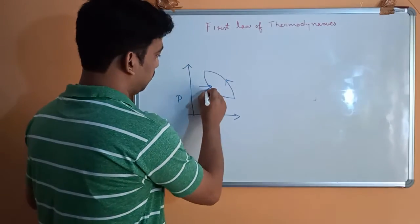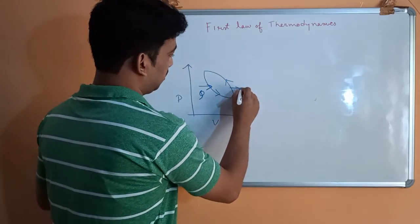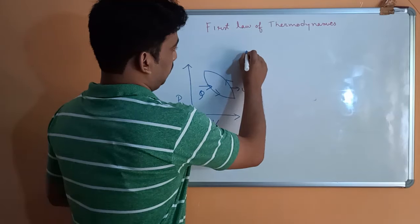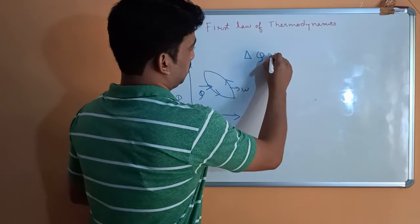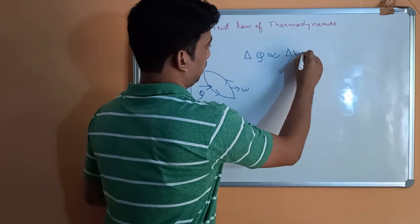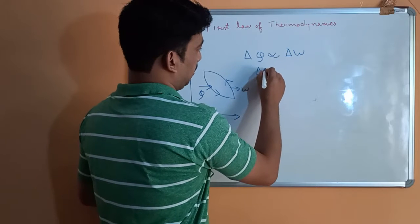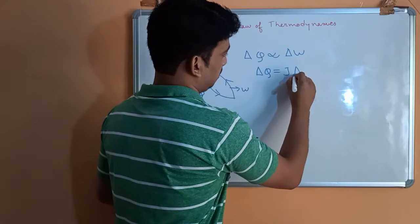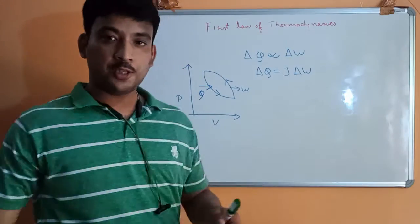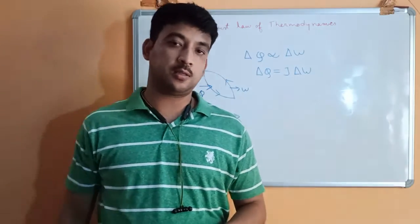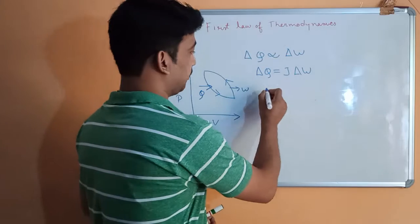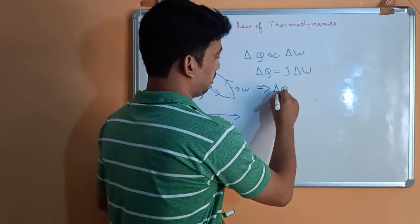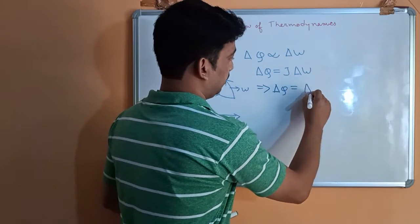Whatever heat is transferred — suppose Q is going in and W is coming out from this process — so DQ is directly proportional to DW. If we remove the proportionality sign, we introduce J, known as Joule's coefficient. The value of J is considered to be 1.